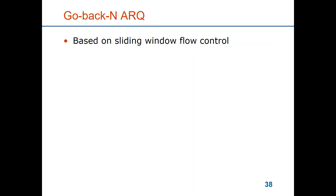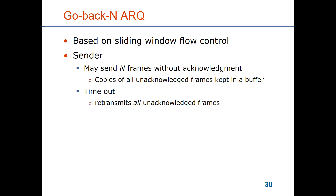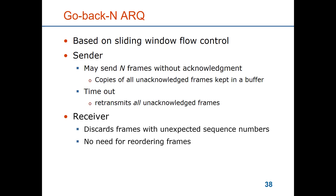Go-back-N is based on the sliding window flow control and the sender may send N frames without any acknowledgement. All sent frames that have not been acknowledged are kept in transmission buffers on the sender side. The timeout works as for stop-and-wait. When several frames are unacknowledged, for go-back-N all unacknowledged frames will be resent. The receiver discards all frames with unexpected sequence number, and since all unacknowledged frames are retransmitted the receiver can simply discard frames that come out of order — no sorting mechanism is necessary at the receiver.